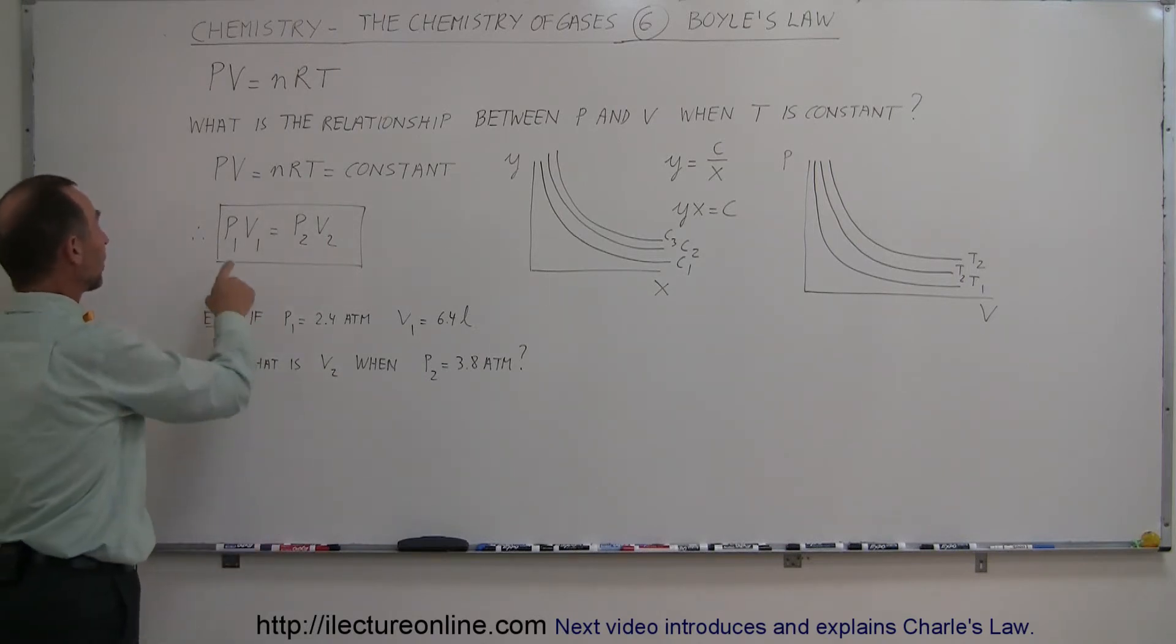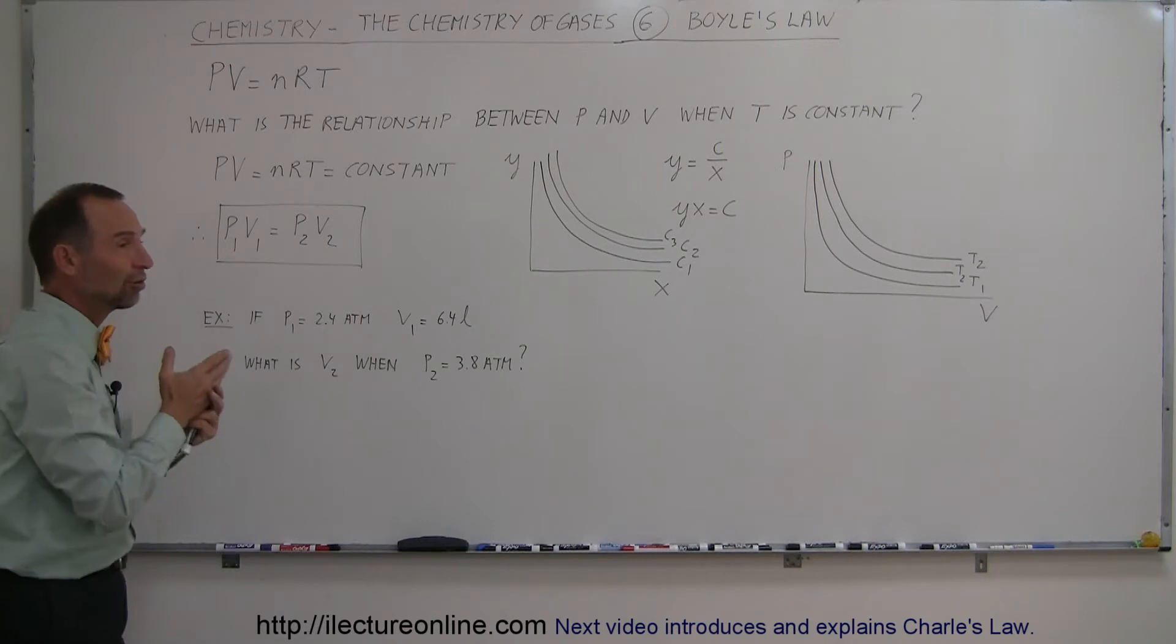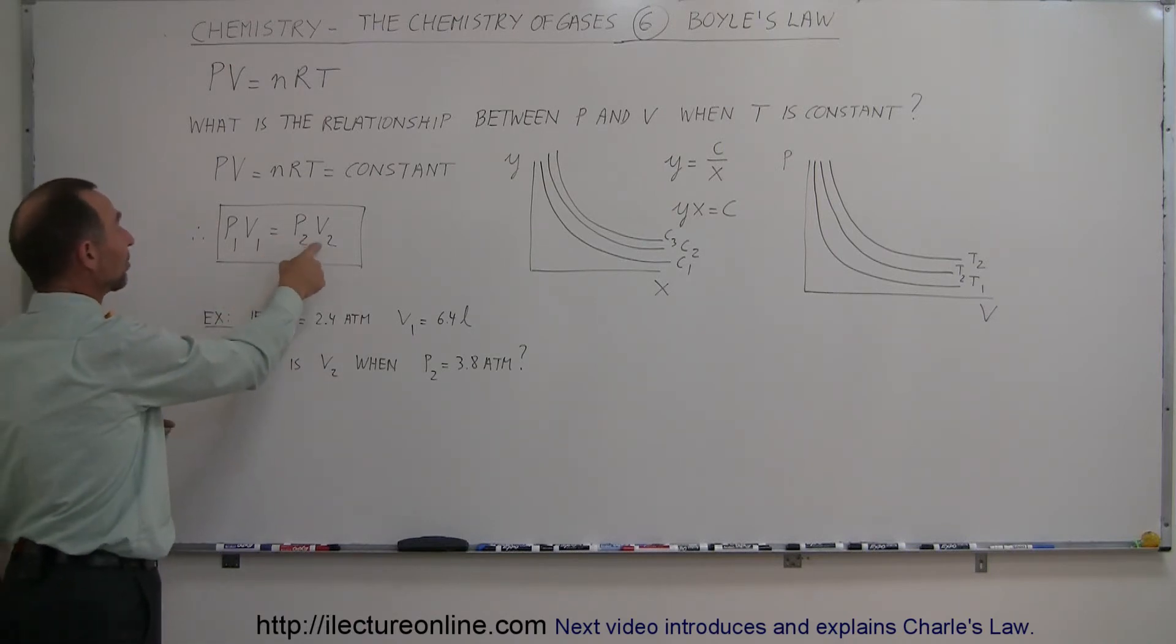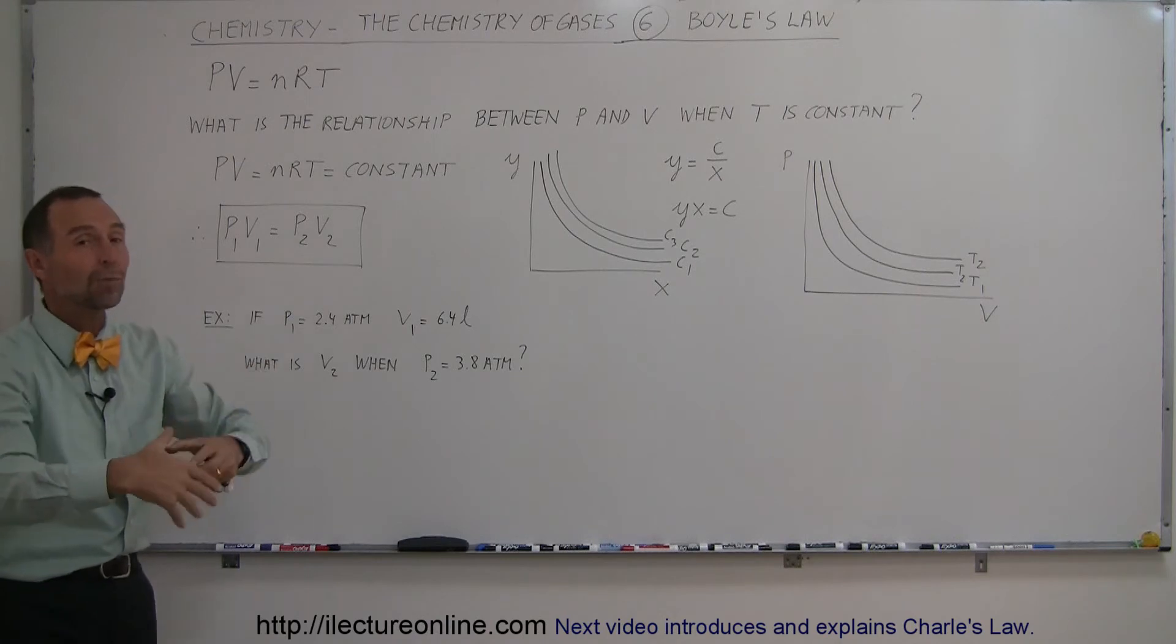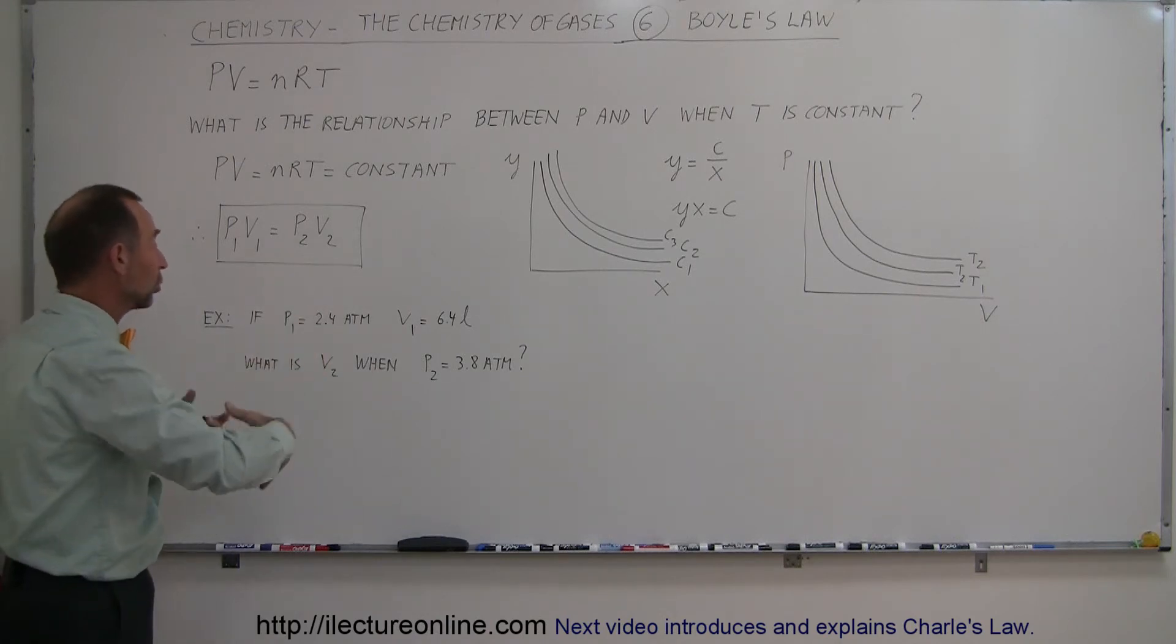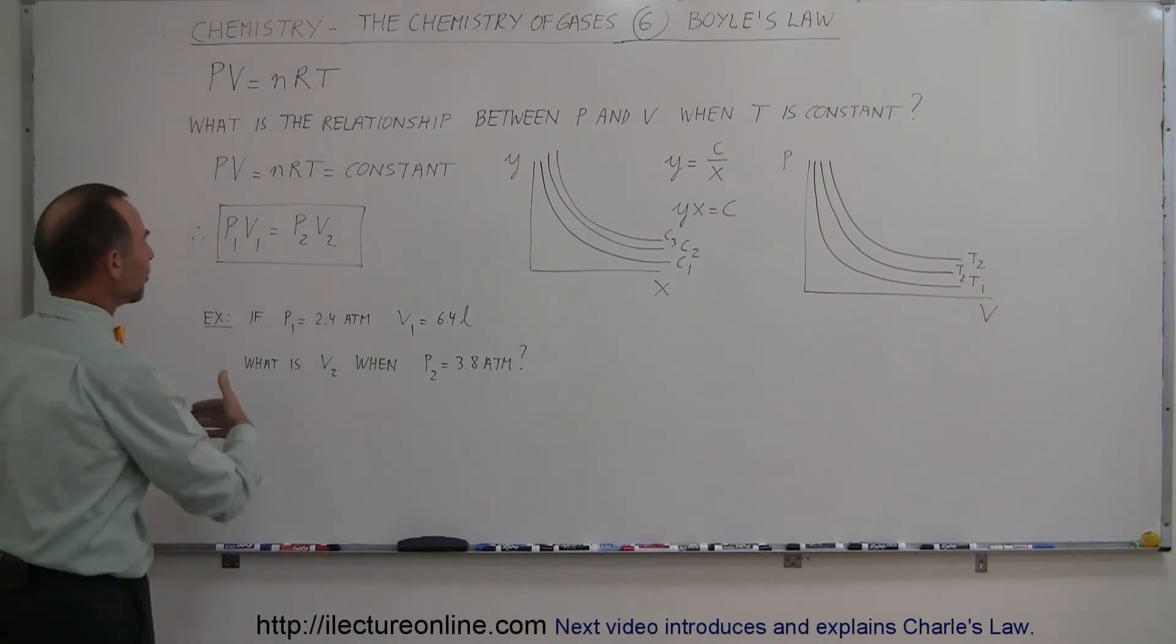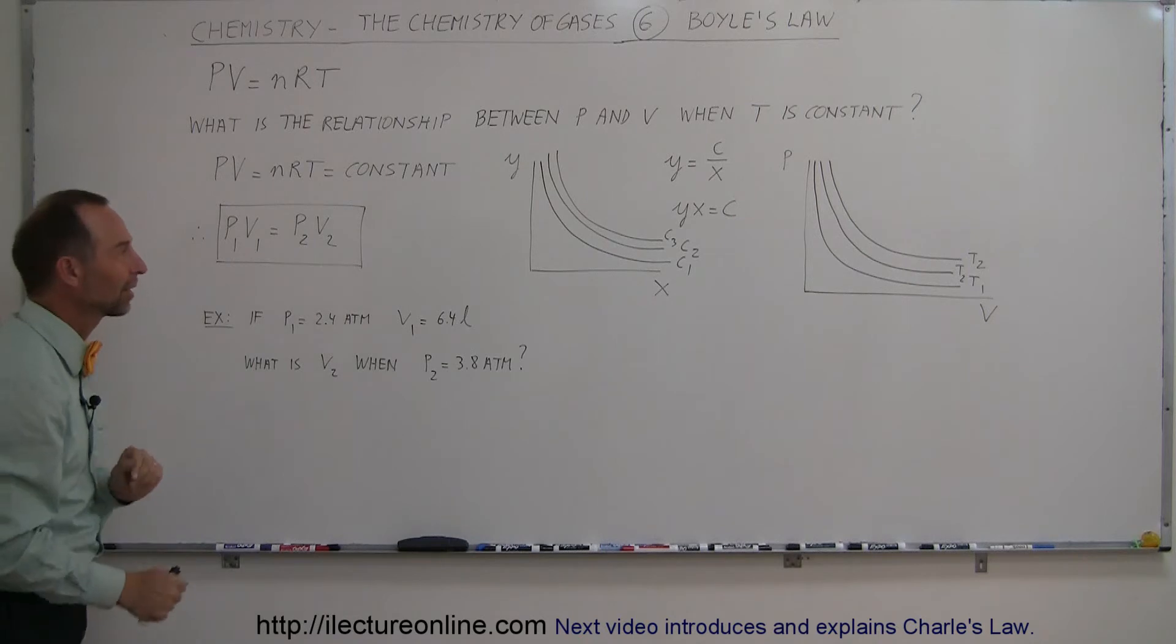If that's true, we can then conclude that P1V1, the pressure and the volume of the gas in state 1, must equal the pressure times the volume in a different state. When we did something to it, like heating it up or cooling it down or whatever, we went, oh, wait a minute, no, no, we can't change the temperature. If we increase the pressure, decrease the pressure, what happens to the volume afterwards?